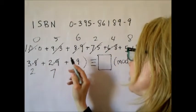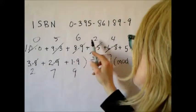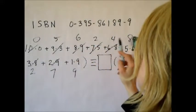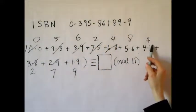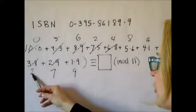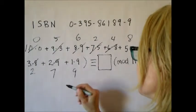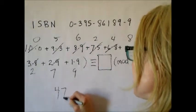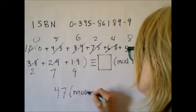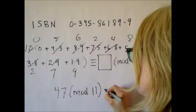And so when we add all these things up, this is 11, 13, 17, 25, 29, 31, 38, and 47. So 47 mod 11 is 3.